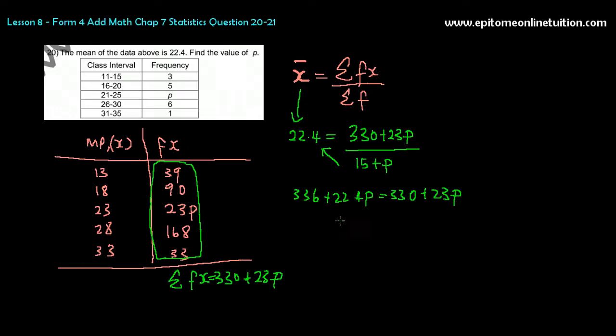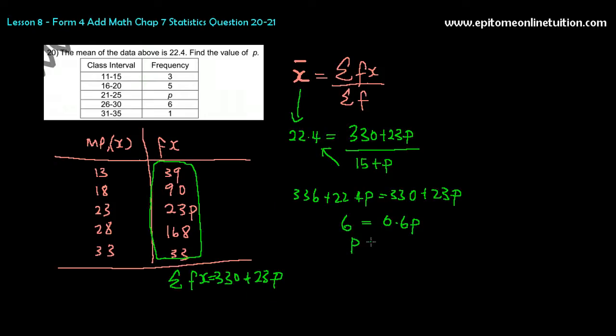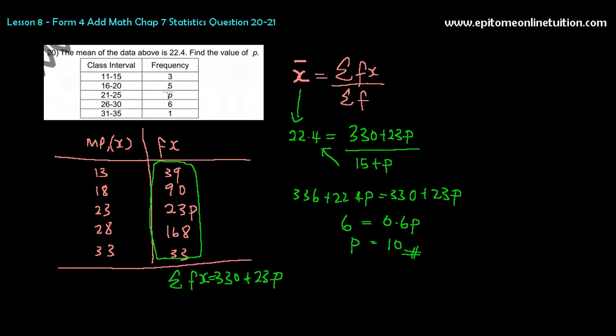And now shift everything to one side. You get 6, and that is 22.4 and 23 get 0.6p. So p is equal to 10. And it makes sense, frequency is 10.